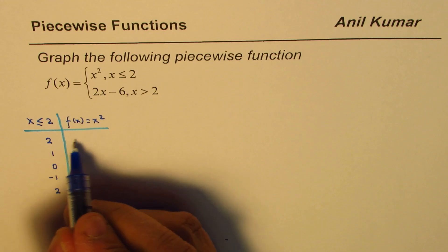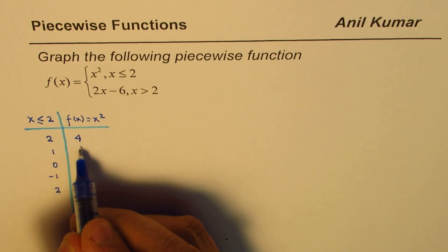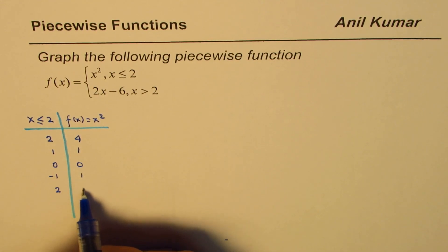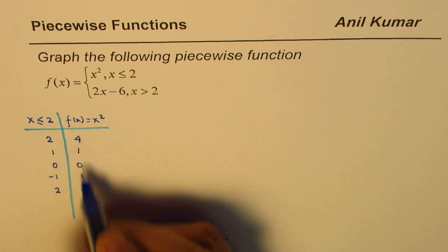For x squared: 2 squared is 4, 1 squared is 1, 0 squared is 0, then 1 and 4. So we get these values for the first piece of the function.